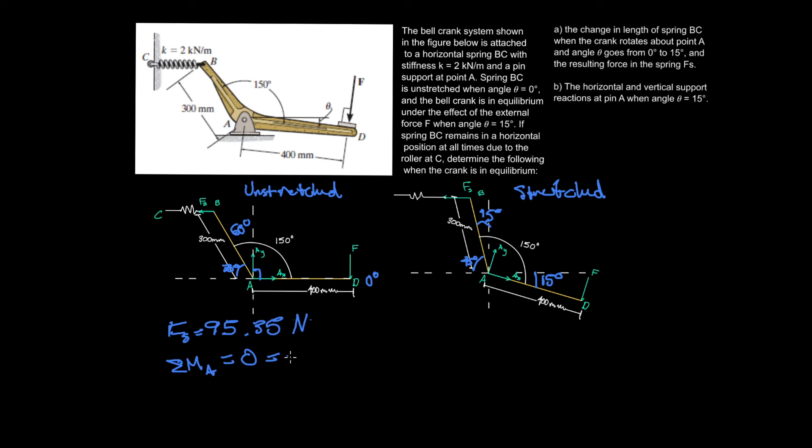So the sum of the moment about A is equal to zero, which is going to be equal to the force of the spring times the perpendicular distance to that force, which is going to be this distance here. So it makes sense, or actually this distance here, because we're going to do it when the spring is stretched, because that's when the force is applied. Rather, so we're using this diagram, just to clarify, is going to be 300 cos of 45, and then minus the force F here times 400. And then solving for this, we're going to get that F is equal to 50.57 newtons.